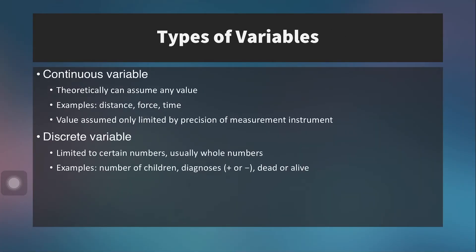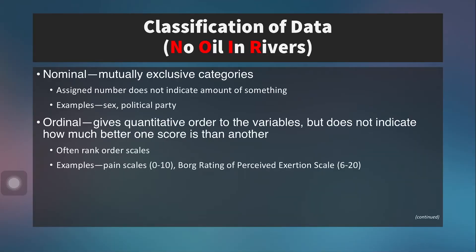There are also different types of variables. A continuous variable can theoretically assume any value — distance can be any value from zero upward, as can force or time. A discrete variable is limited to certain numbers, usually whole numbers. For example, your finishing place in a marathon: you can finish first, second, or third, but not fourth-and-a-half. Another example is the number of children — you can't really have half a child, so that's a discrete variable.